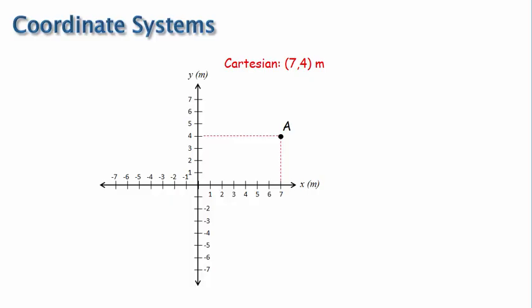Now let's write the location of A in polar coordinates. R is the radial distance from the origin to the location we're describing, A in this case. And theta is the angle measured from the positive axis to the radial R line. Given the x and y coordinates, we can find the R and theta coordinates with trig. Start by making a right triangle. You can see that R is the hypotenuse, and the other sides are the x and y components, 7 meters and 4 meters.